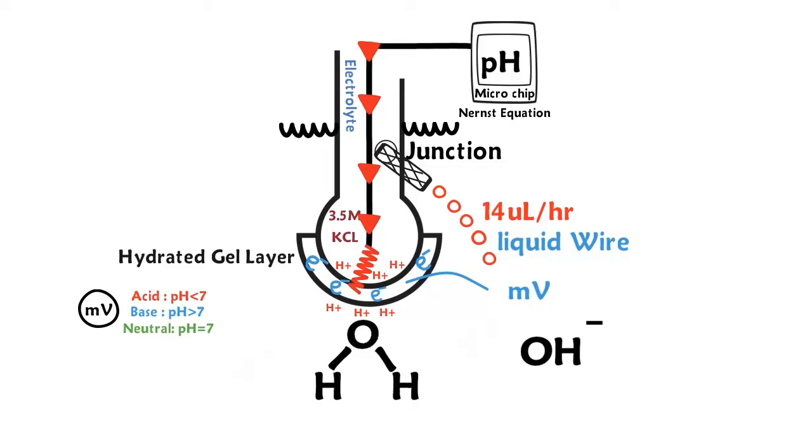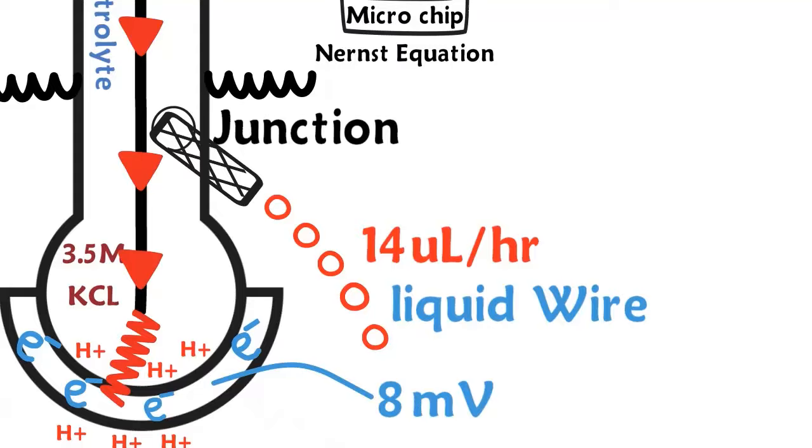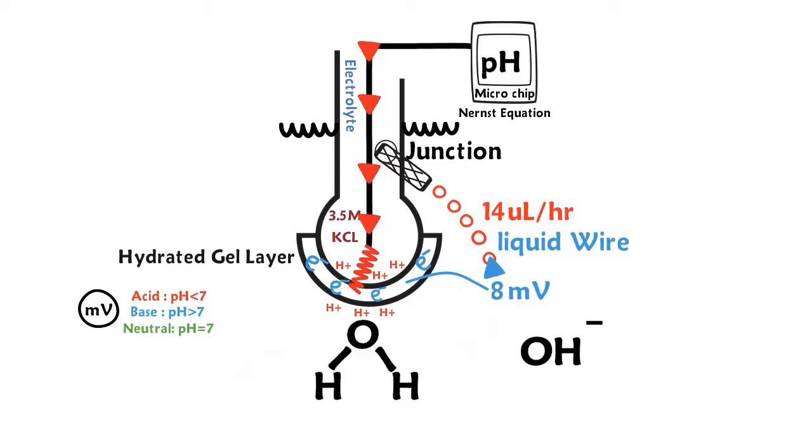This 8 millivolt charge needs to re-enter the pH electrode to be transmitted to the microchip so the Nernst equation can provide a pH value. The junction type leaking 3.5 molar KCl, a high salt electrical conductive solution into your sample, will now serve as a liquid wire to transmit the 8 millivolt signal through the liquid wire, junction, metal wire, and into the microchip so the Nernst equation can generate a pH value.